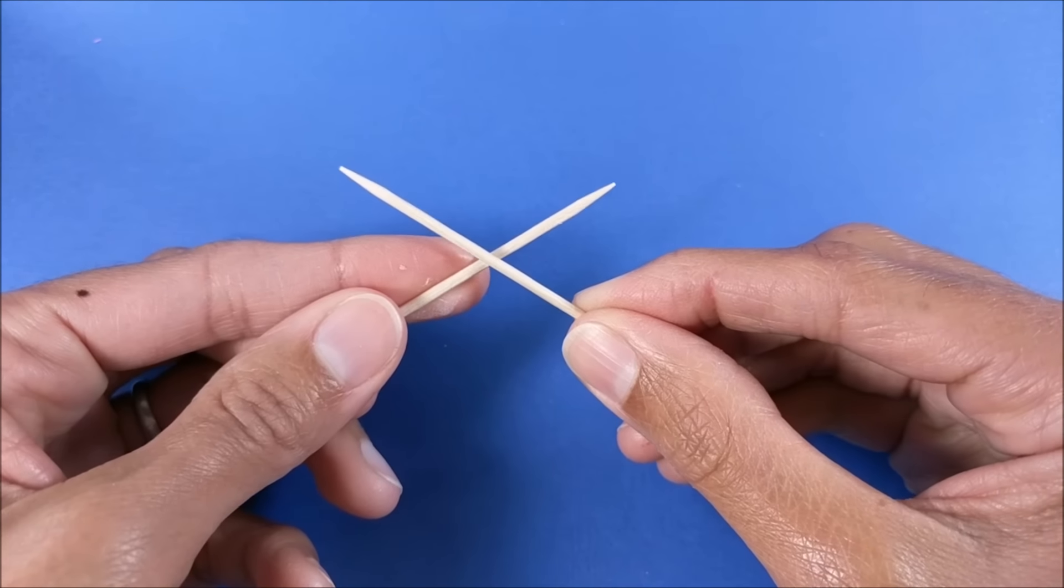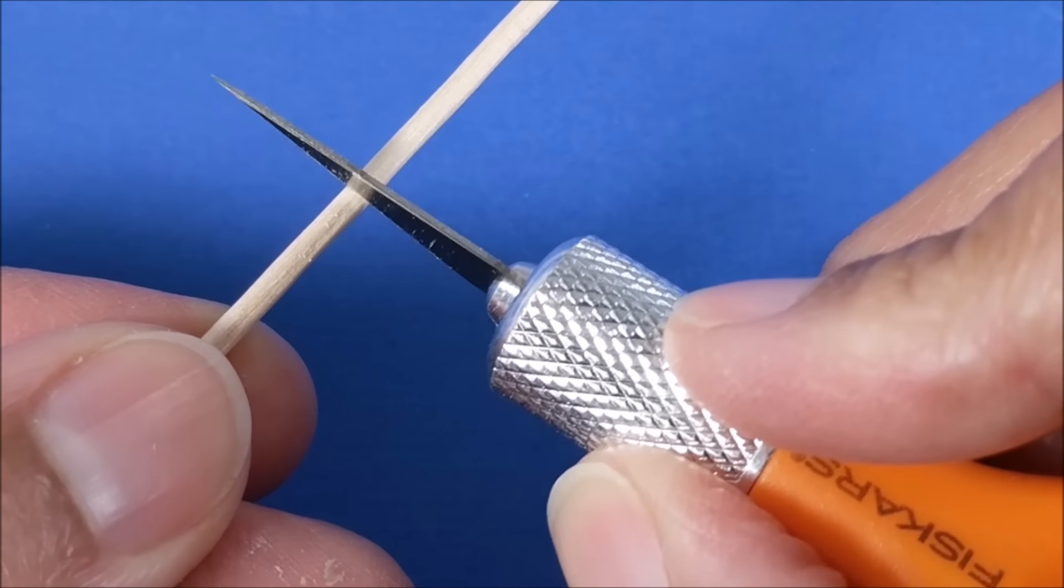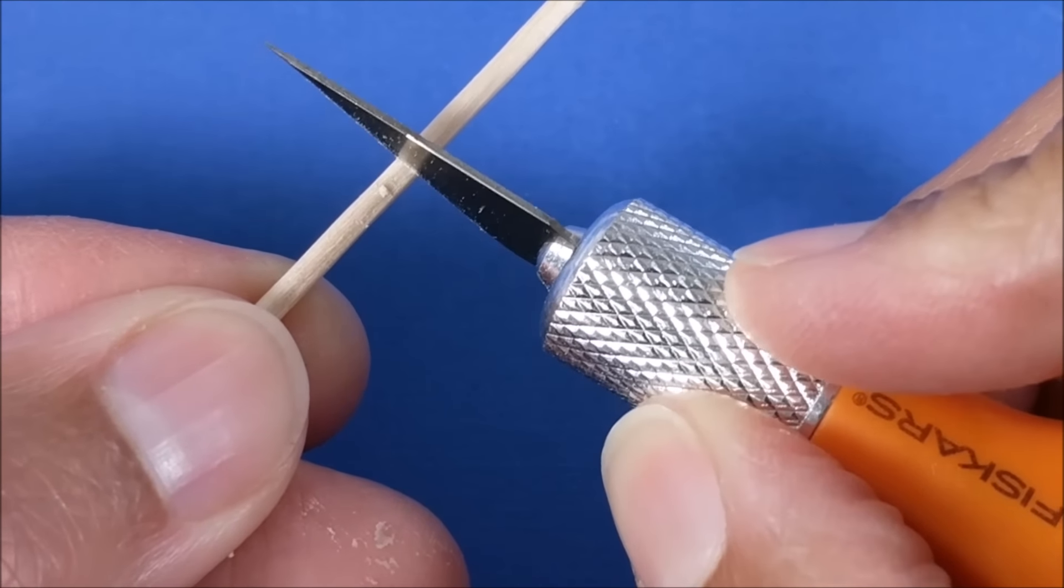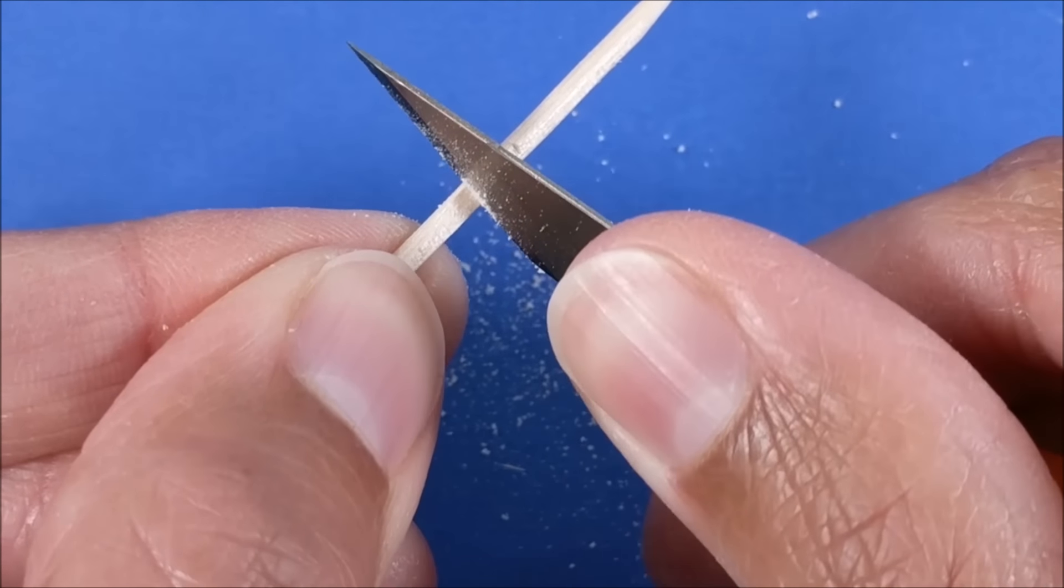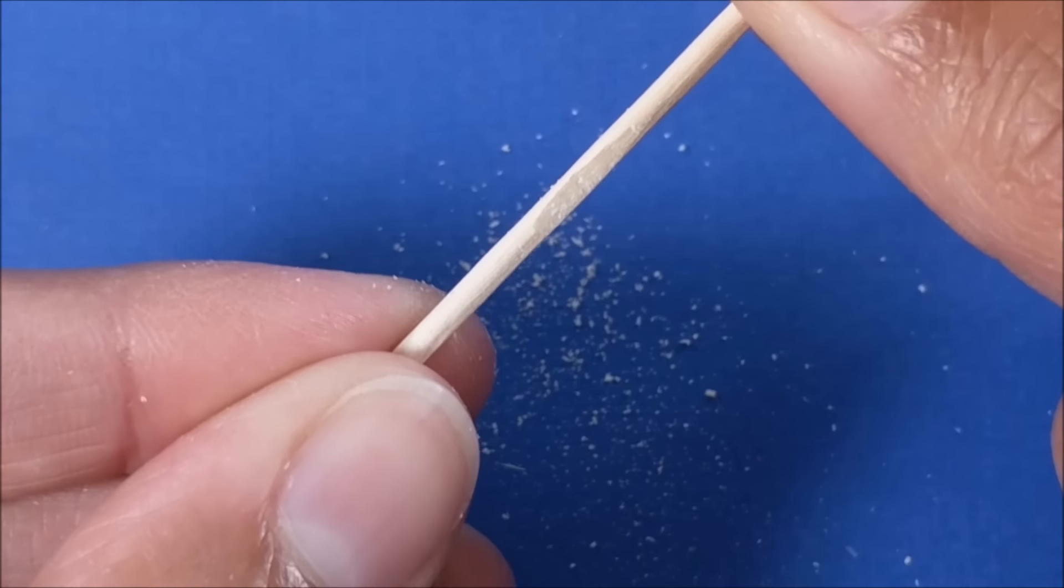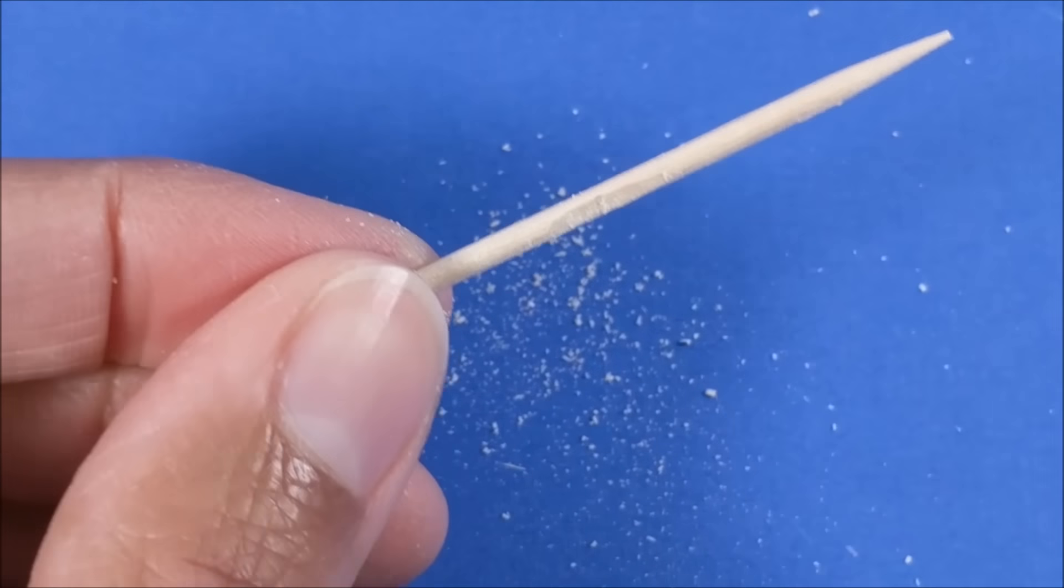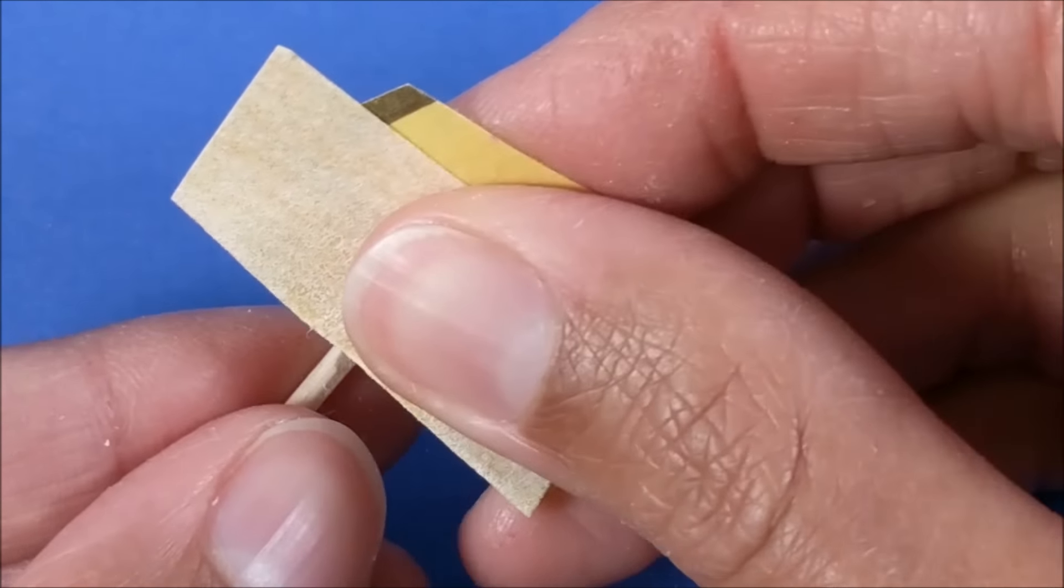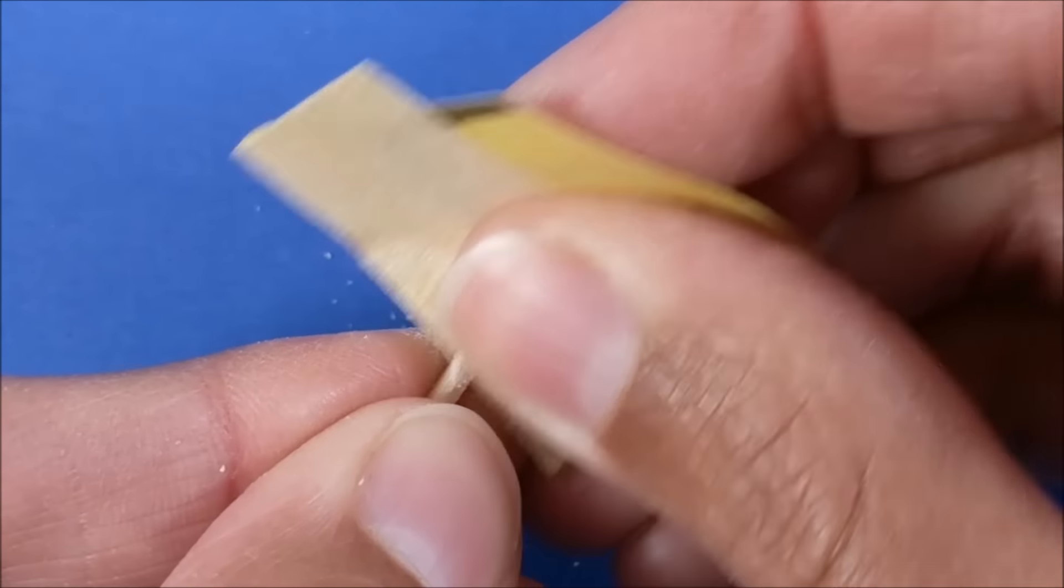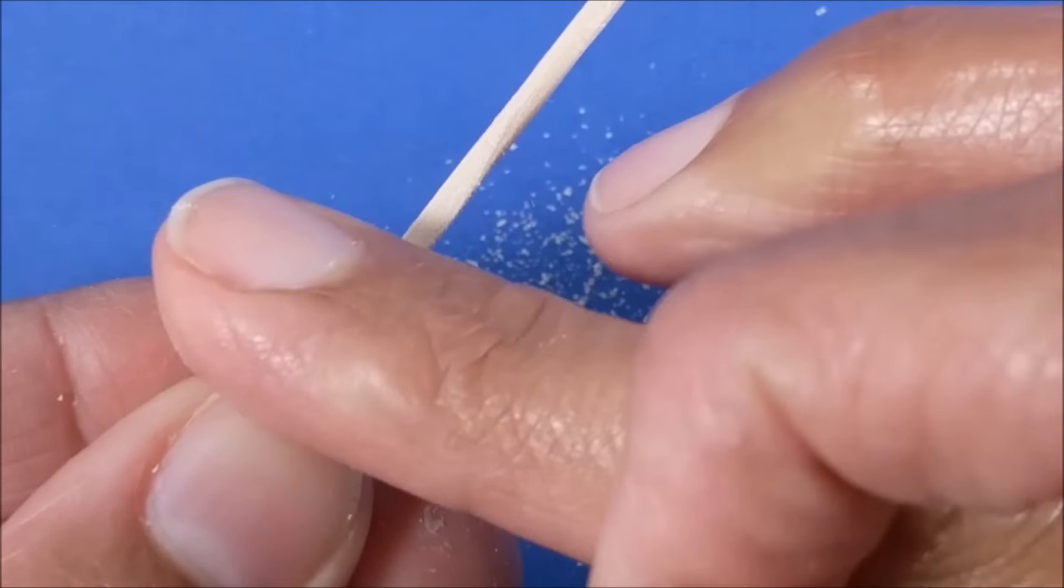Next I'm taking two toothpicks and I want to crisscross them. So at the center where they will meet, I carefully use my exacto knife to kind of file some of the wood down, and I can use sandpaper to smooth that out. That way they'll attach a little bit more securely.